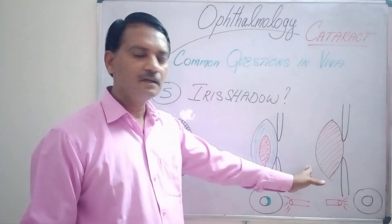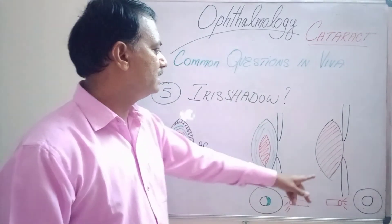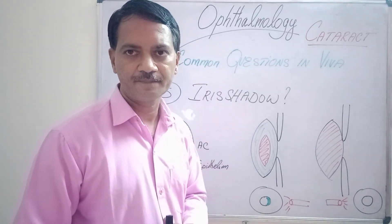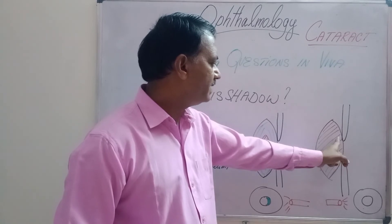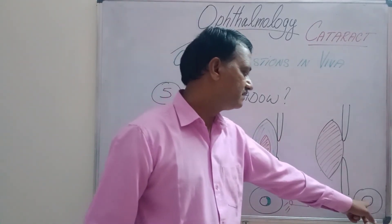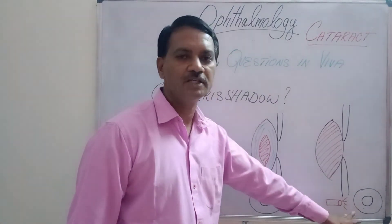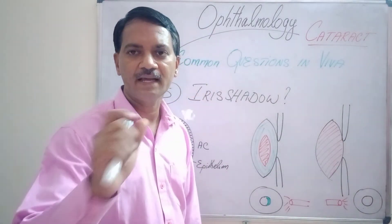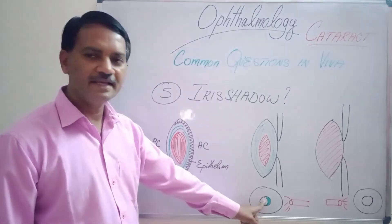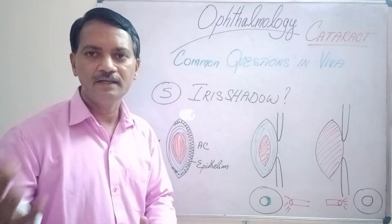In a mature cataract, because this is the end stage of cataract going to degenerate and become hypermature, all the fibers are opacified. So there are no clear lens fibers at all. There are no clear lens fibers between the opacity and the iris sitting on the lens. Because of that, when you throw light from the sides, the lens will appear whitish or pearly white in color, and you won't see any iris shadow, because there are no clear lens fibers between the cataractous part of the lens and the iris. This is the reason for getting an iris shadow in an immature cataract and not getting it in a mature cataract.